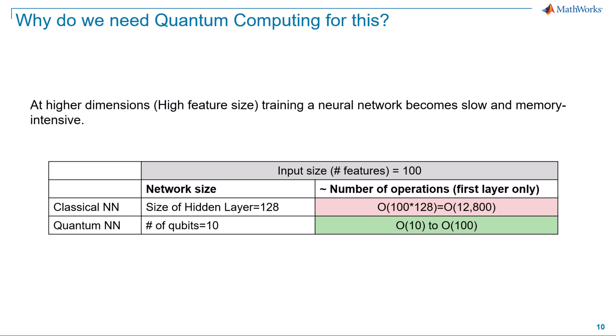In that case, a single layer of a neural network would require 12,800 operations. However, mapping 100 features onto 10 quantum bits or qubits would greatly reduce the number of operations needed, thanks to qubits superposition and entanglement allowing for efficient computations. To learn more about these fundamentals, please refer to our documentation on introduction to quantum computing, linked in the description.